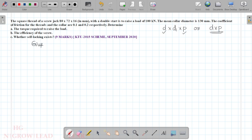Given, from the question, we can write d equals 80 mm, then d1 is 72 mm, then pitch is 16 mm. The load is 100 kN. The mean collar diameter, dc, is 130 mm.